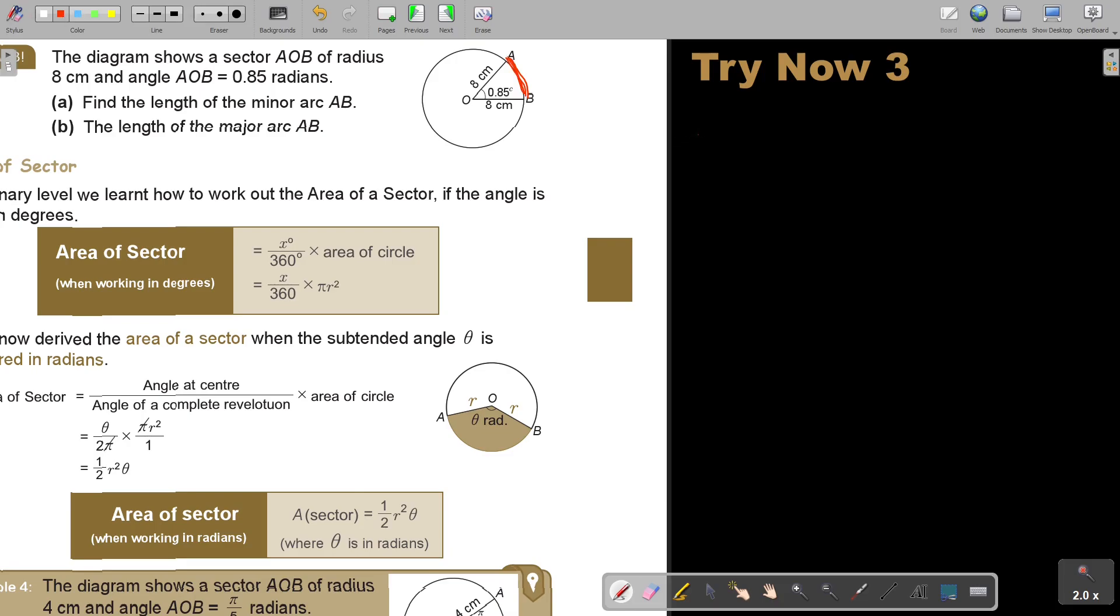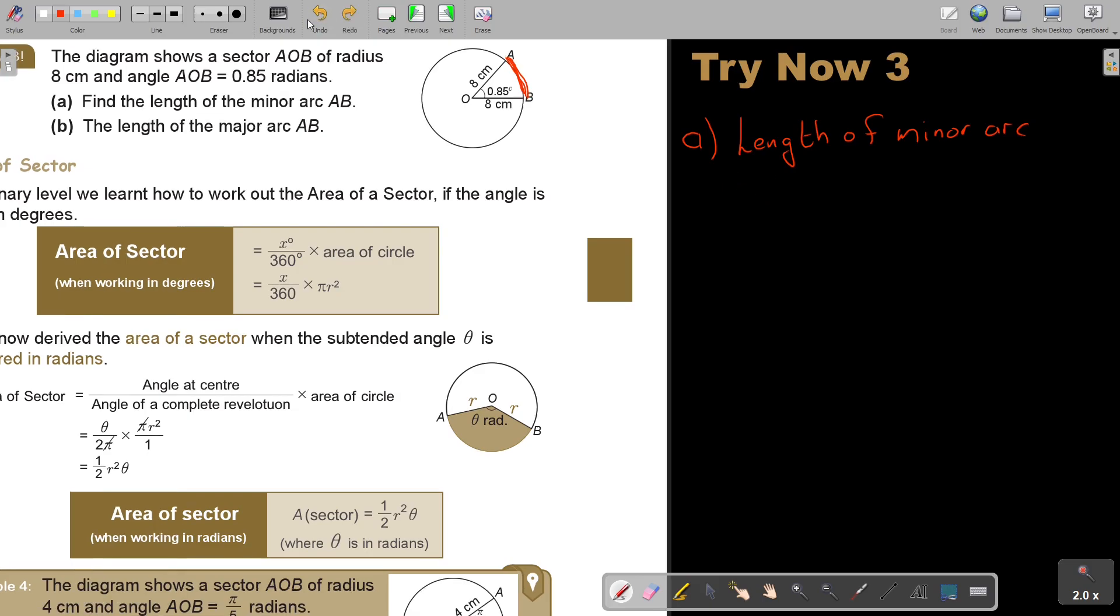So if I start with number A, I'm just going to say length of minor arc AB, and that will be rθ. And what is r? It's 8 centimeters. Multiply θ is 0.85. And if I press it on the calculator, I get 6.8 centimeters.